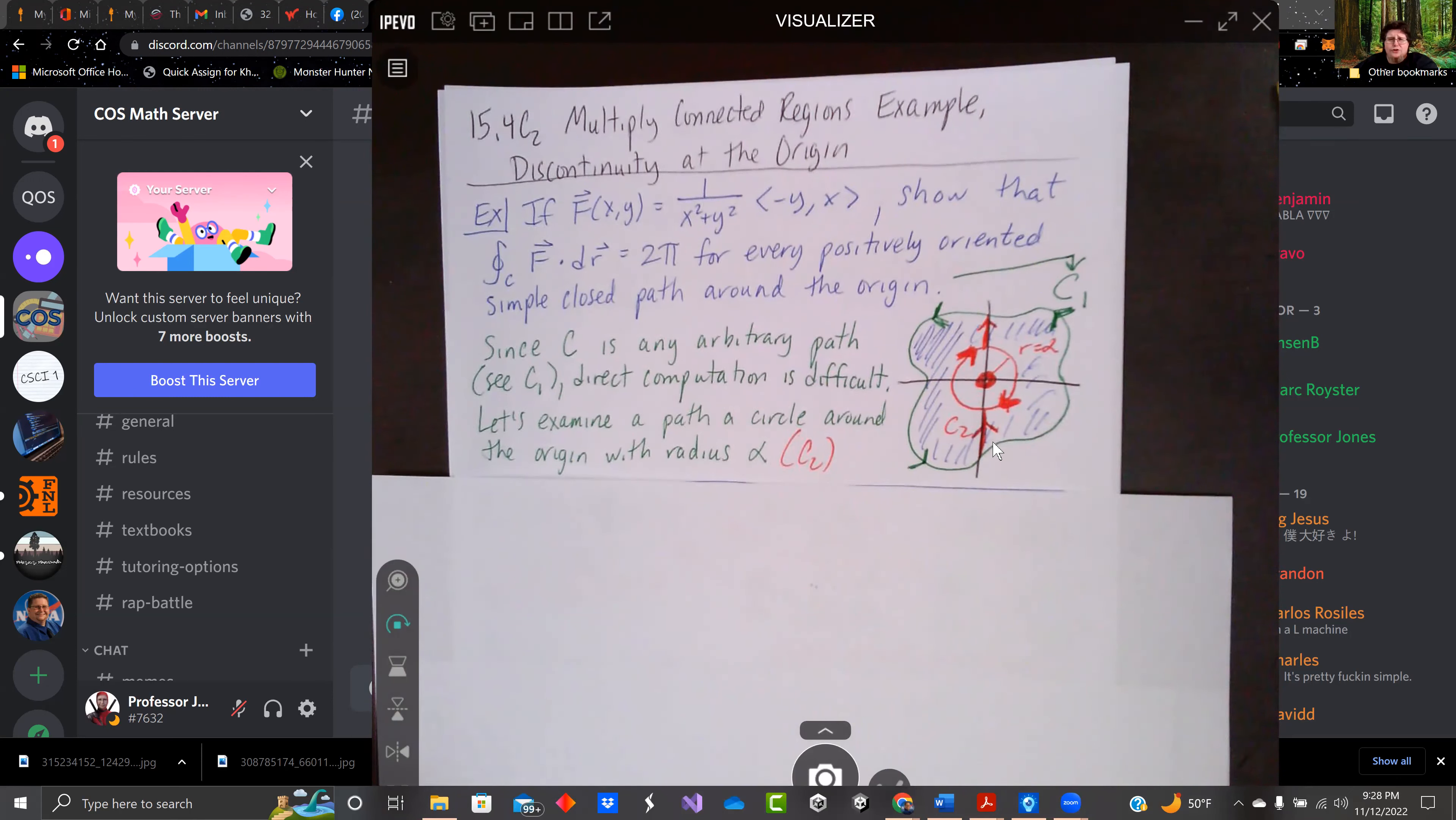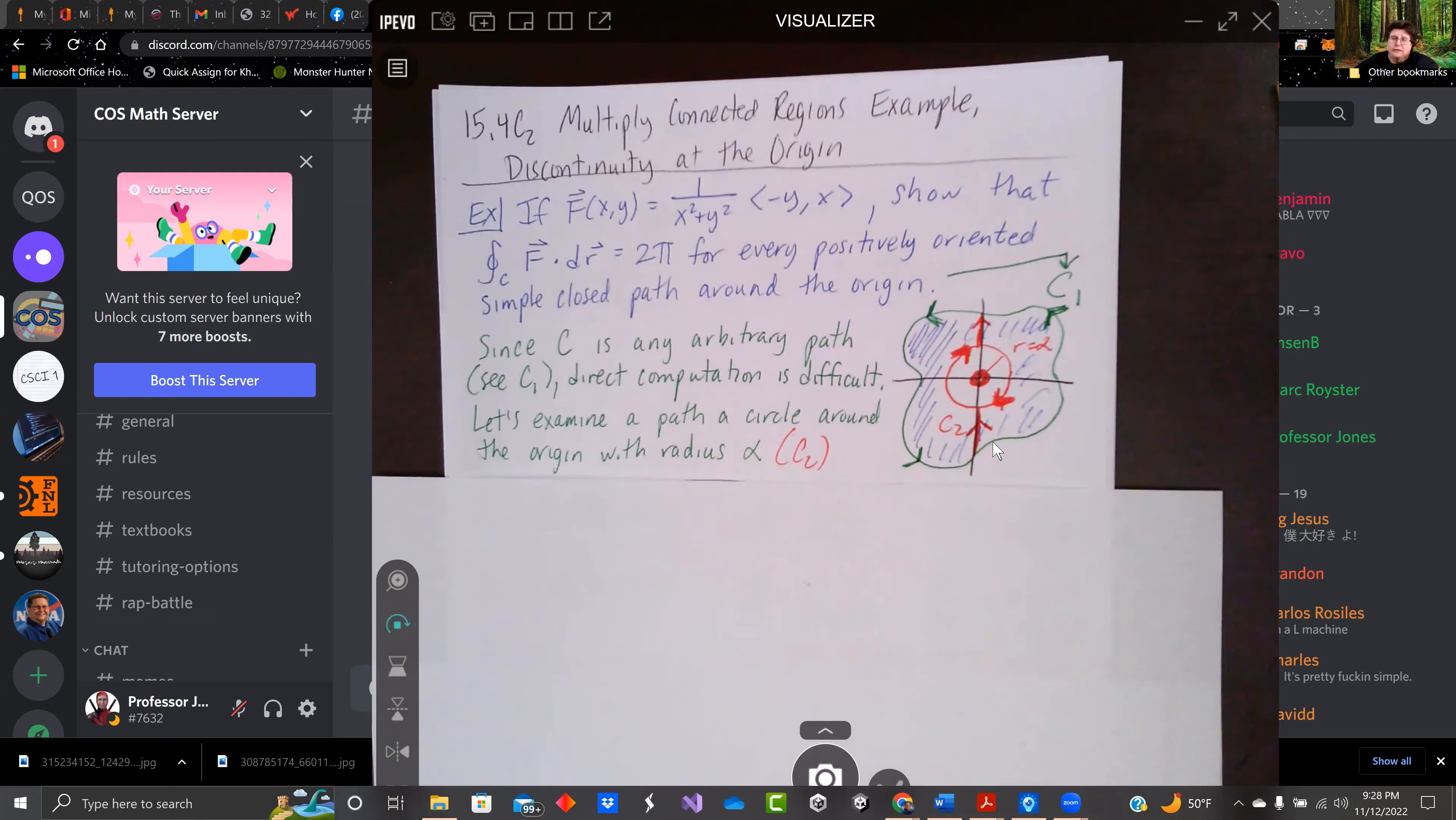So you'll notice at the origin (0,0), 1 over x squared plus y squared has a discontinuity. But we're going to show that we can find the region in any area around that thing that contains it. The closed line integral on that for this function. The closed line integral f·dr is 2π for any positively oriented simple closed path around the origin.